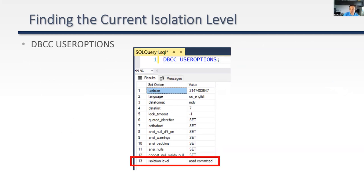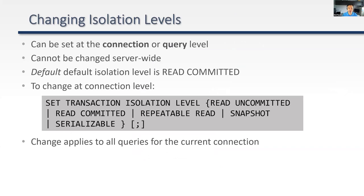Isolation levels can be changed at either the connection or the query level. They cannot be changed server-wide. The default is read committed — so if you install an on-premises SQL Server today and make no changes, you're in read committed. You can change the isolation level at the connection level using SET TRANSACTION ISOLATION LEVEL, but that only applies to the current connection or your current window in SSMS.